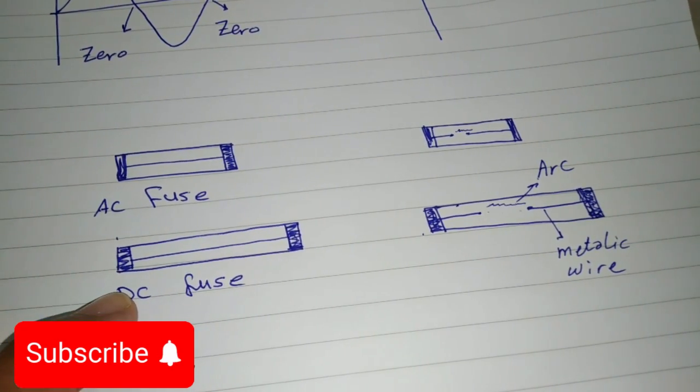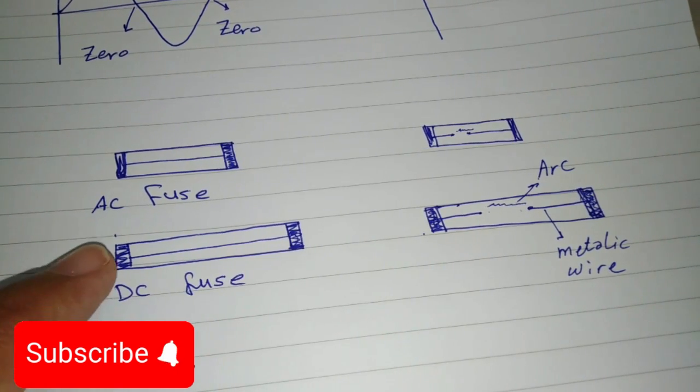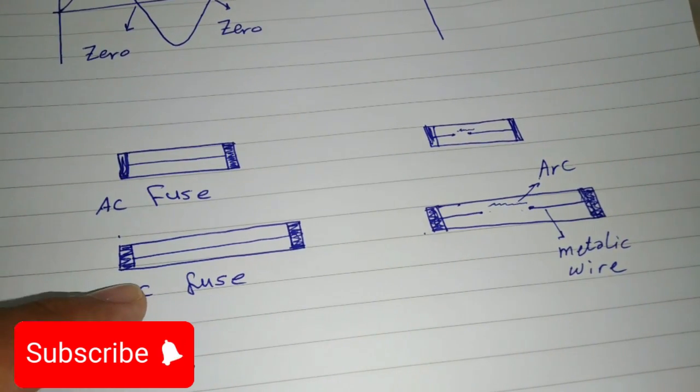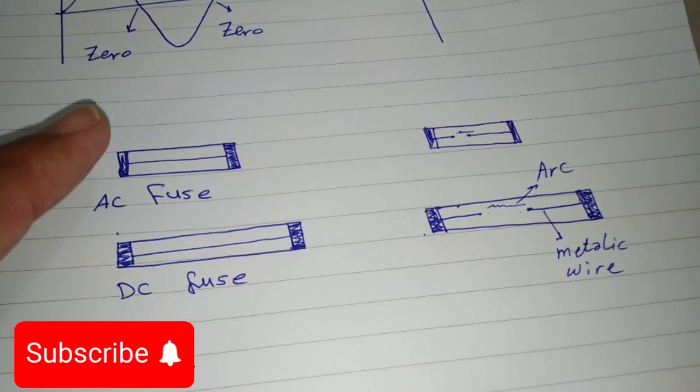And that, my friends, is where the plot thickens. AC fuses aren't designed to handle the stubborn arcs in DC systems. They're like, wait, we didn't sign up for this.